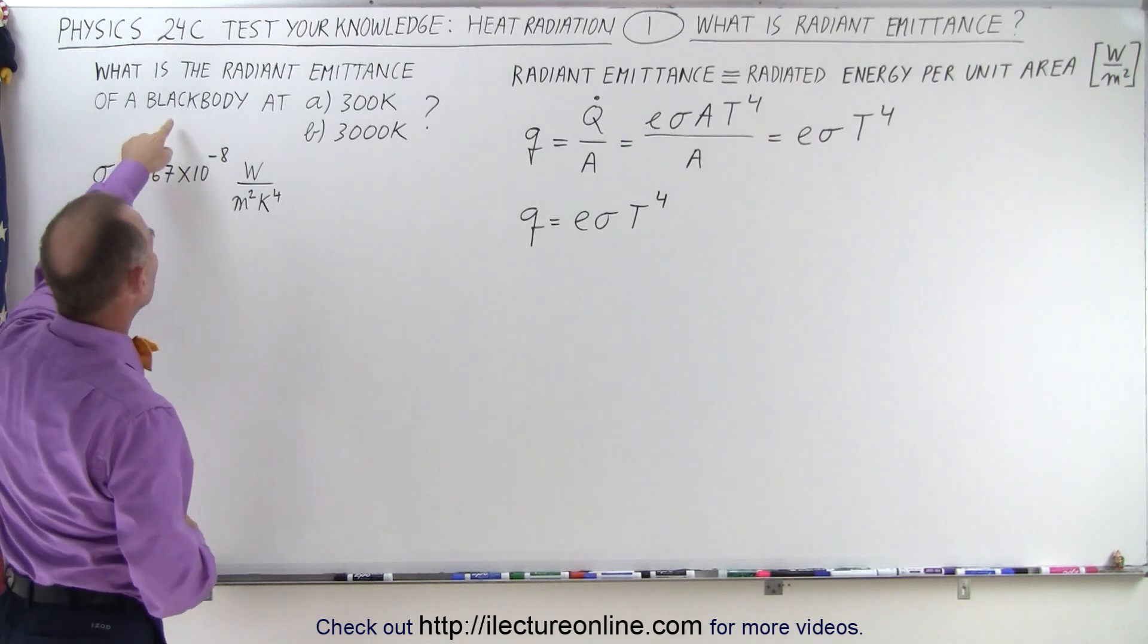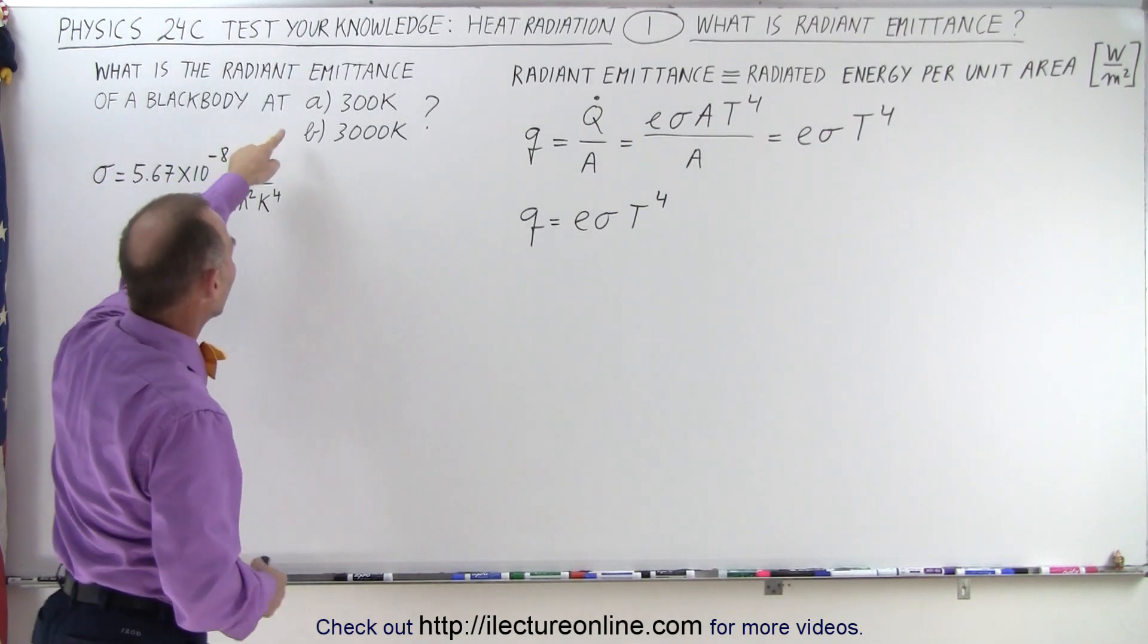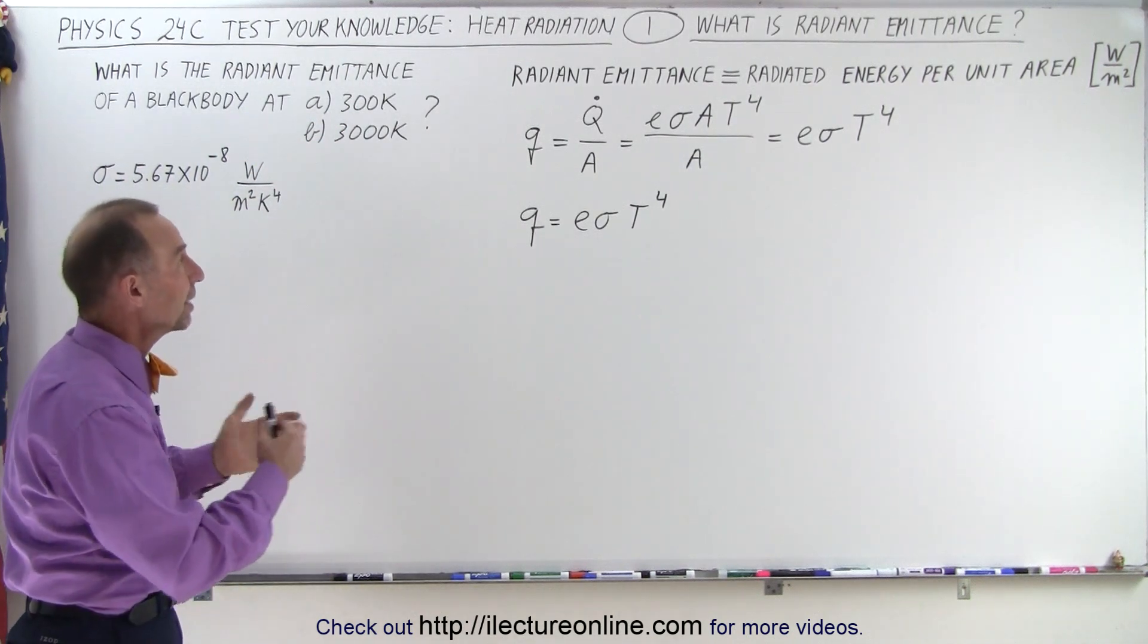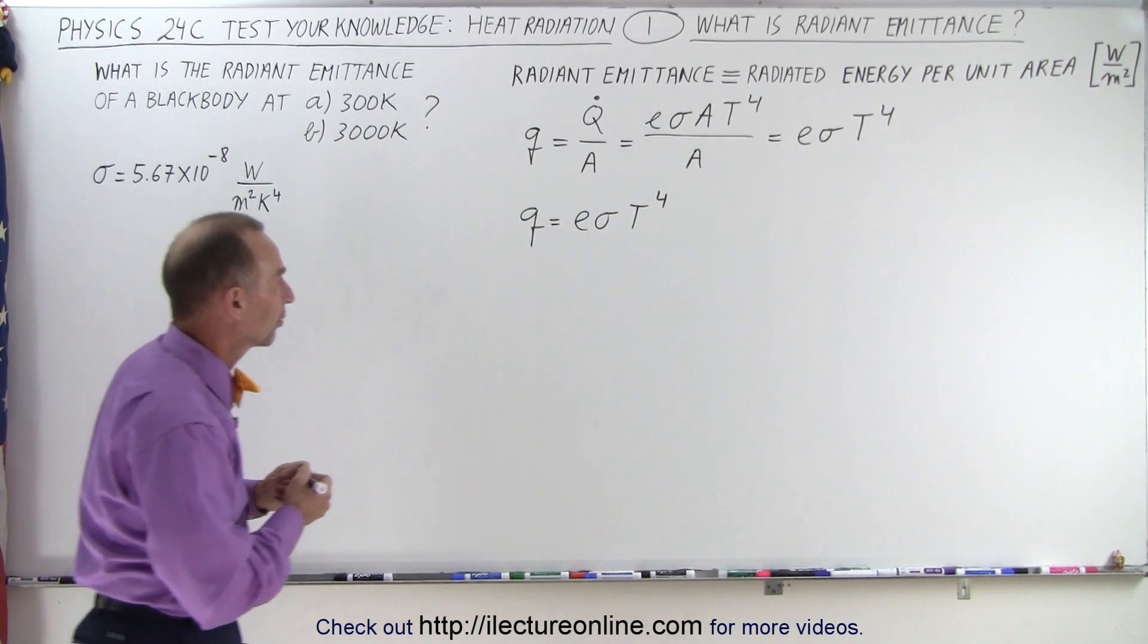So if we're going to apply that to two objects, one that is 300 Kelvin and one that is 3000 Kelvin, what does the radiant emittance look like for those particular objects?